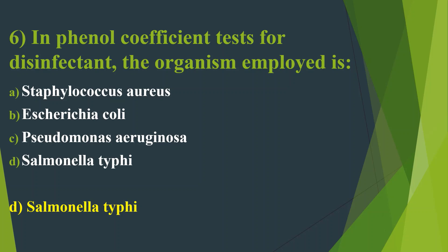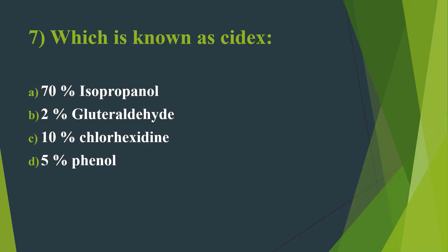Seventh question: Which is known as a chemical sterilant? Option A: 70% isopropanol. Option B: 2% glutaraldehyde. Option C: 10% chlorhexidine. Option D: 5% phenol. Here the answer is Option B, 2% glutaraldehyde. It is used to sterilize endoscopes, bronchoscopes, and dialysis equipment.